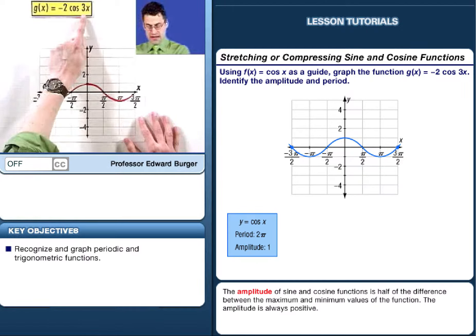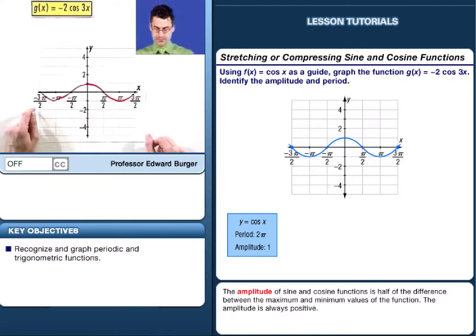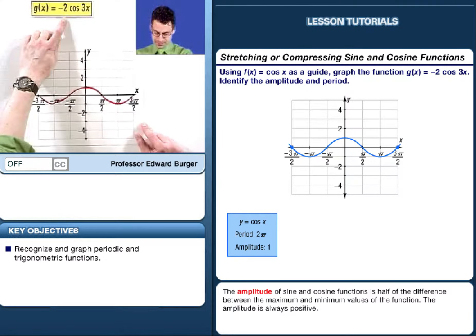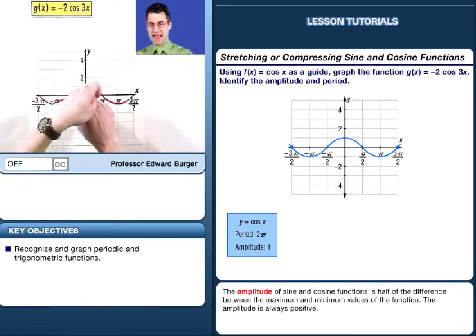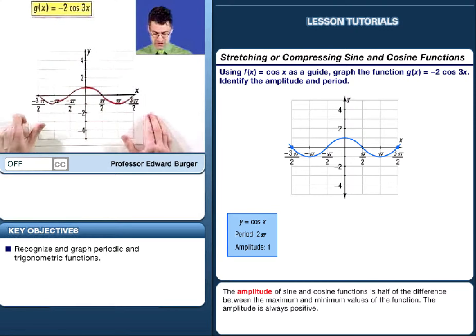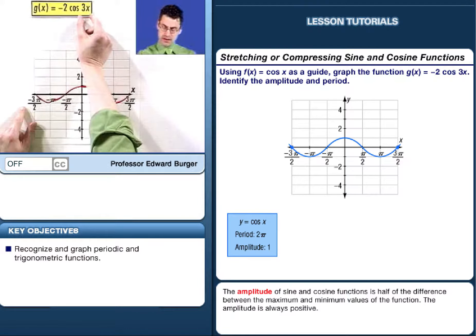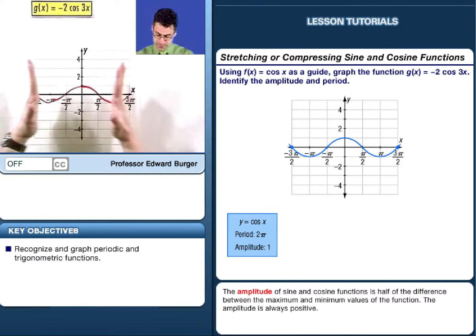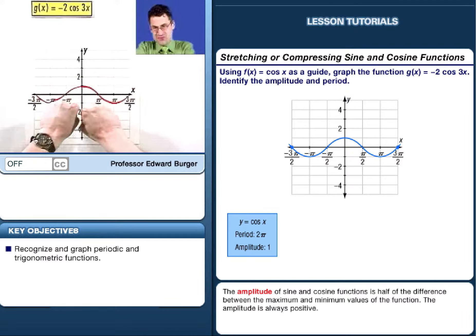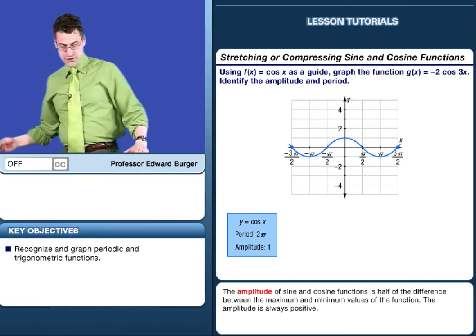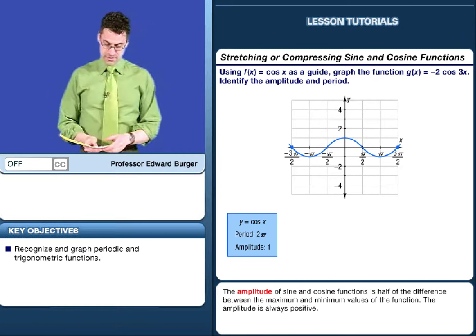So now, this 3 will change the period, and the negative 2 in front will change what we call the amplitude, how high and low the function is going to go. It's a vertical stretch, basically. And the 3 multiple in front is going to either compress, and so we have lots of wiggles, or stretch out, so we have to wait a long time for those wiggles. Let me actually show you how to transform these functions.